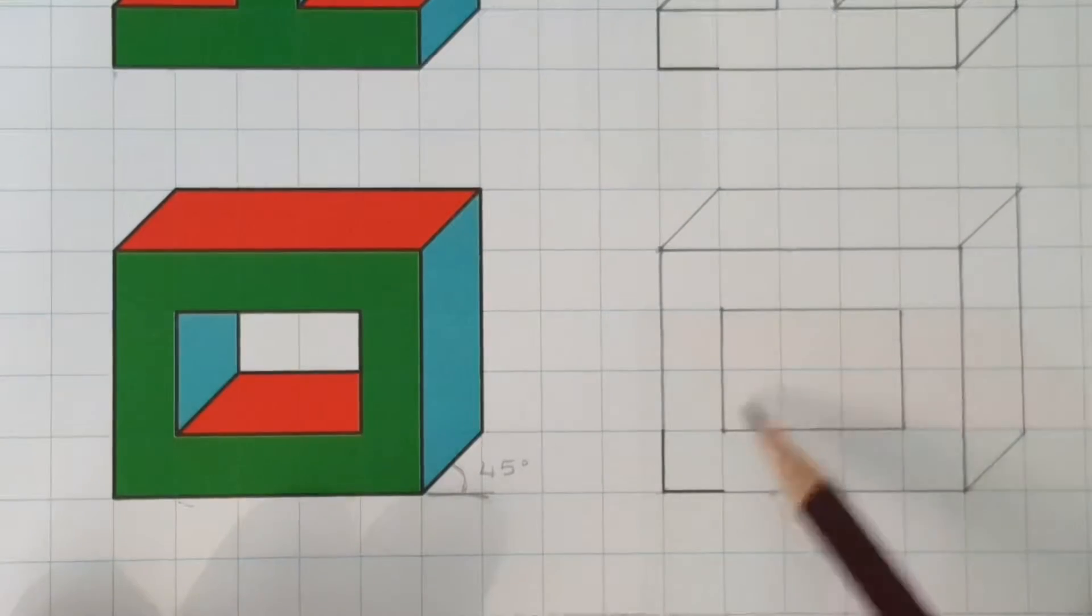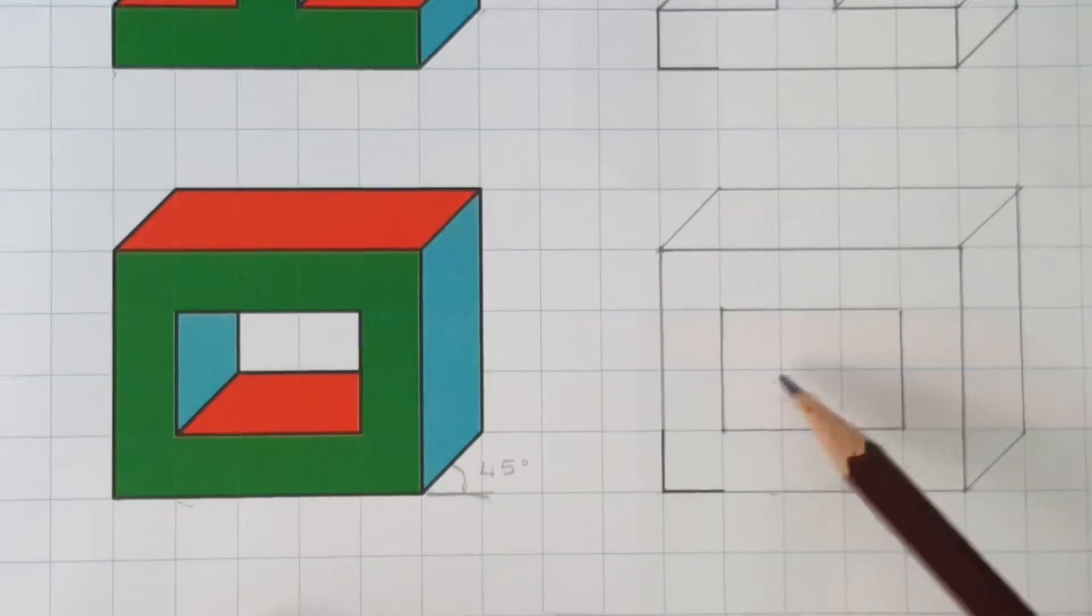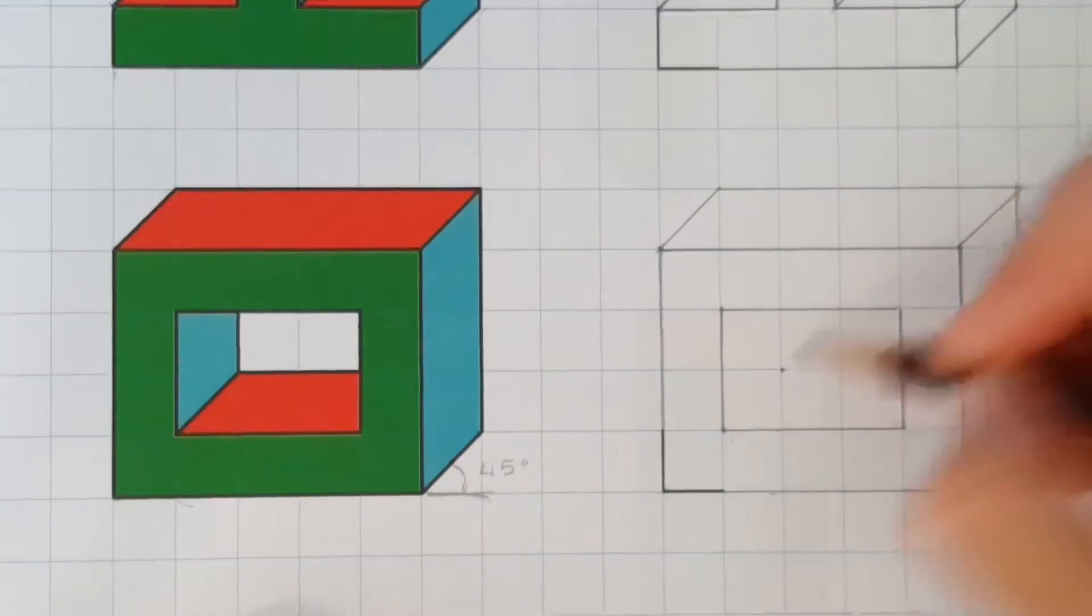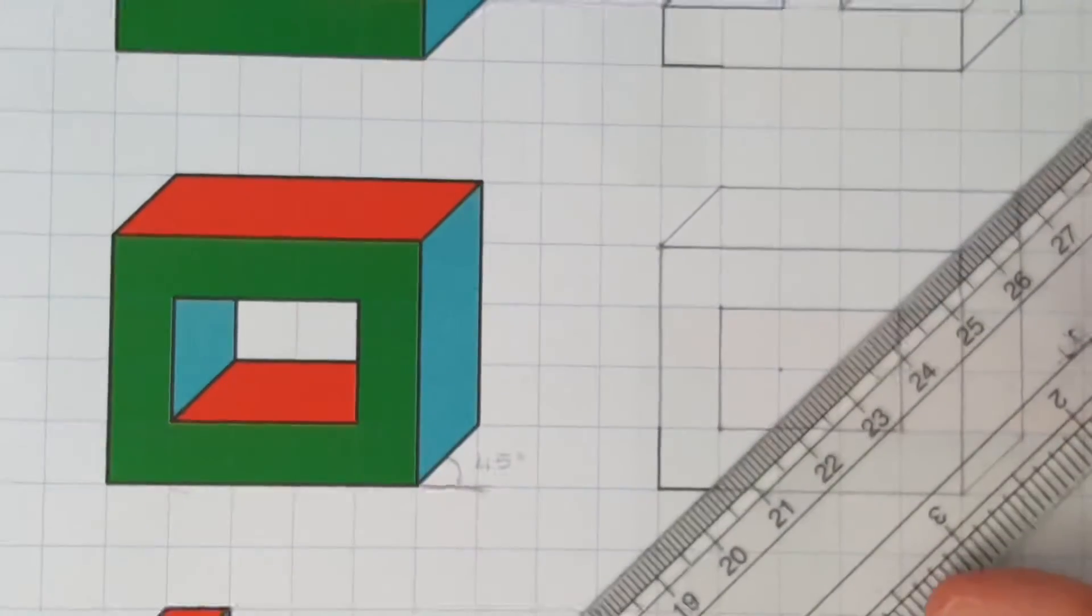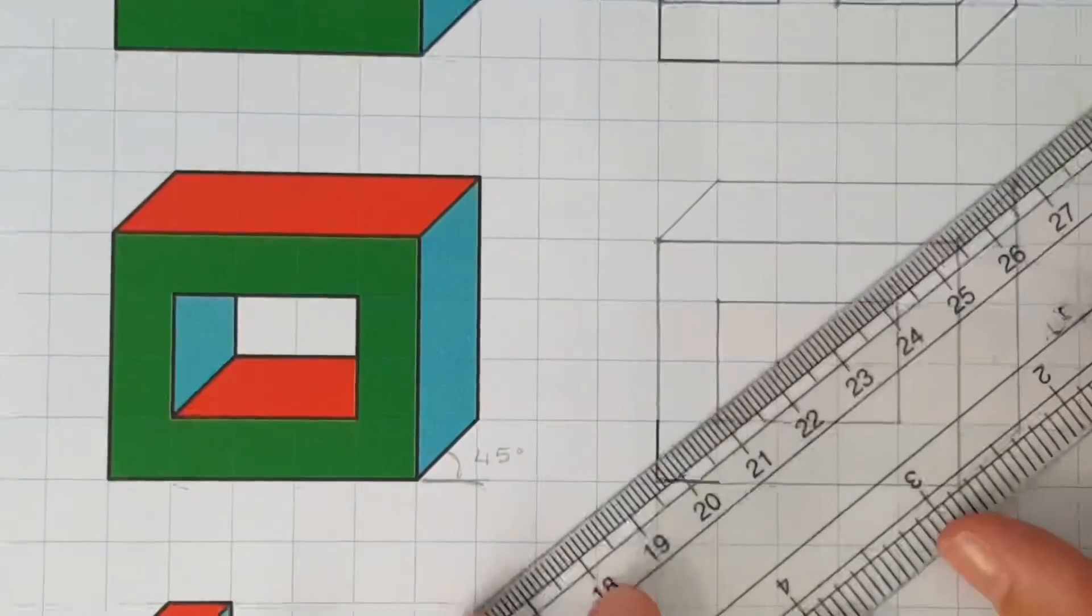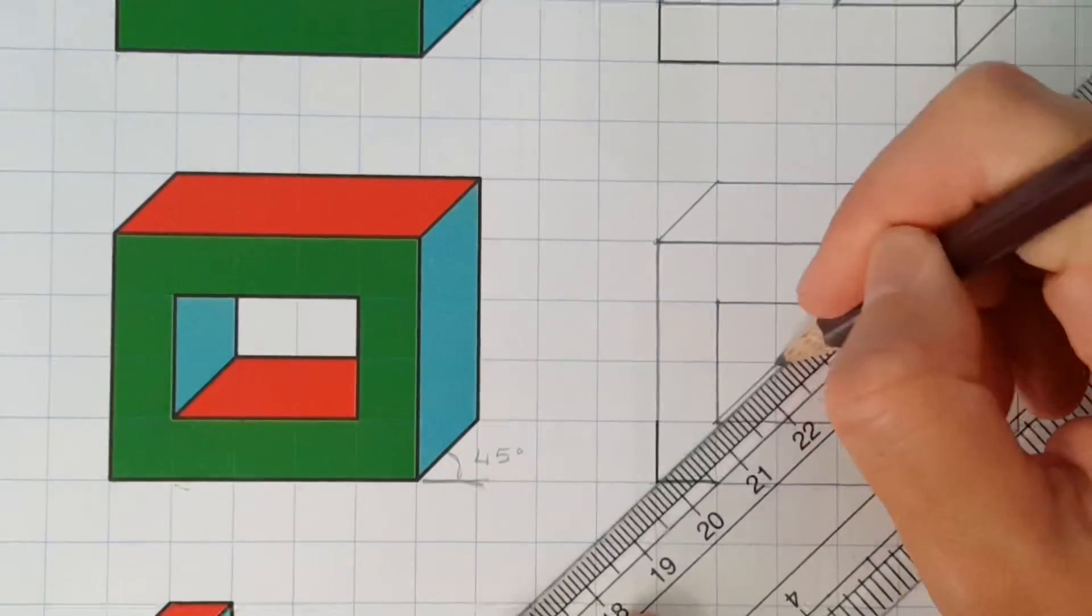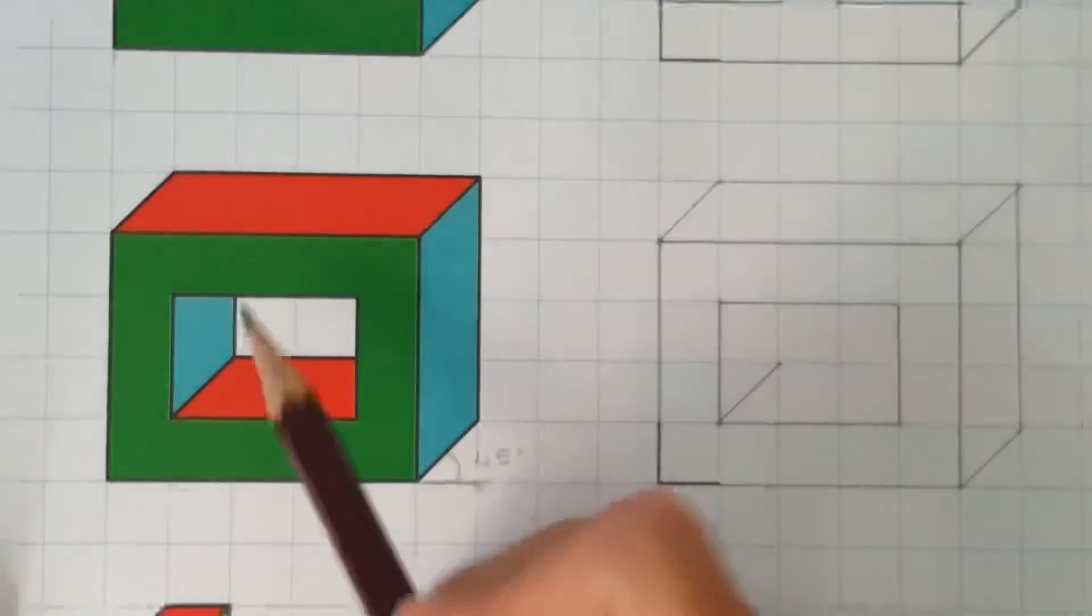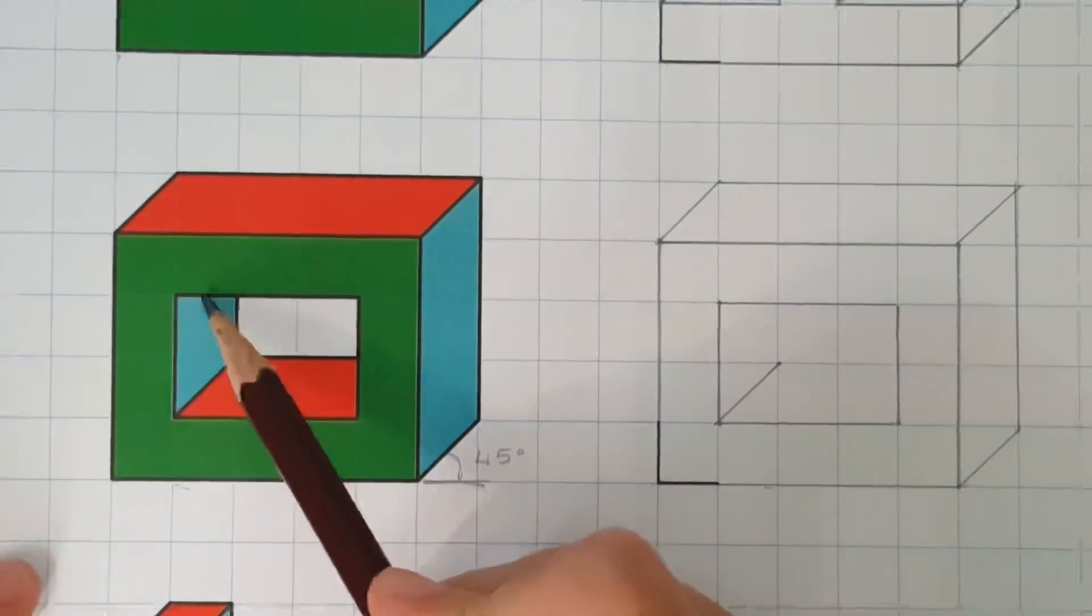And now we have that inner corner that we're seeing right here. And as we all know, in an oblique projection, all of the angled lines are going to be at 45 degrees. Always at an oblique projection, which is in a cabinet. So let's draw that 45 degree line.